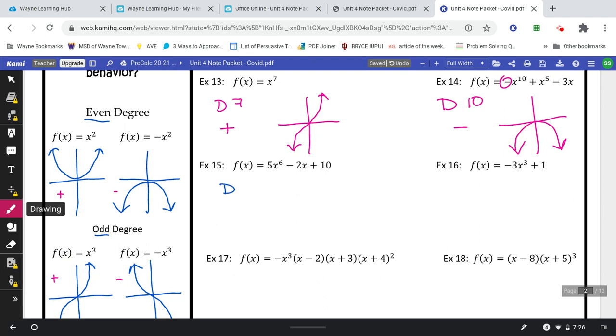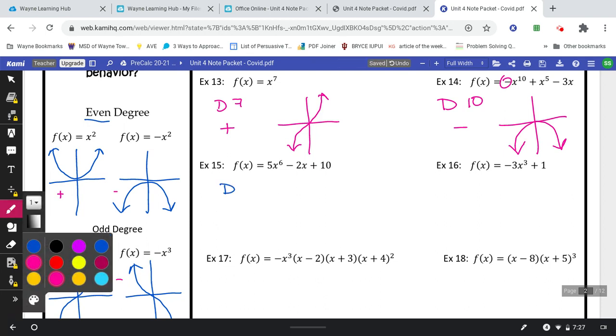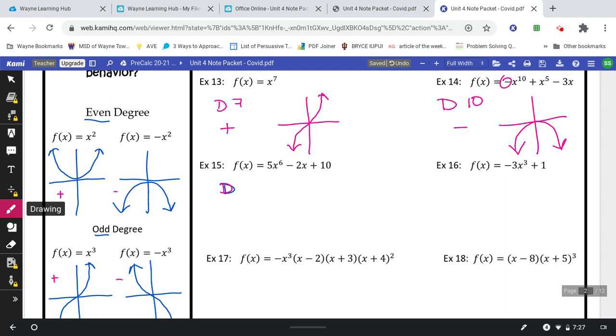This is a degree six. Again, look for your largest exponent. It's a positive. You go based just on the number in front. So even, positive, looks like that.